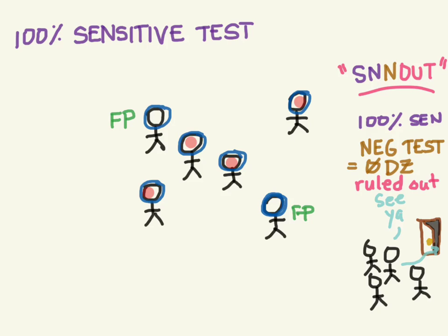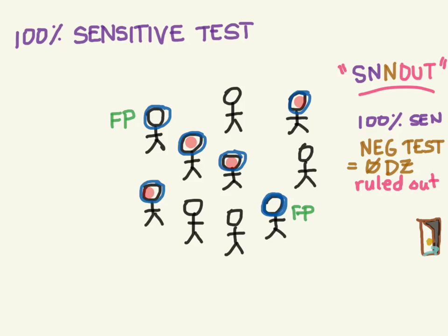Even though this test was 100% sensitive and we didn't send home anyone with the disease, it's still not a perfect test. We unnecessarily kept two people who didn't need to stay — our test was positive for them. Now, this is also a 100% sensitive test — and so is a test where everybody tests positive. Would we be sending home anybody with the disease? No, because we would keep everyone. But look at all these people that we kept unnecessarily — those are false positives. We need a test that is more specific than this.